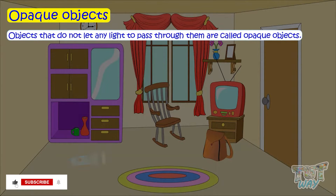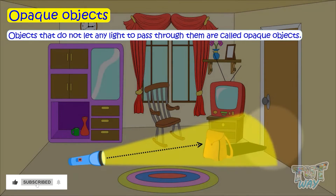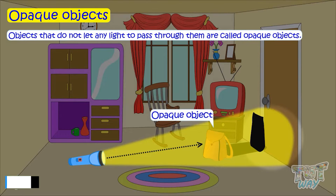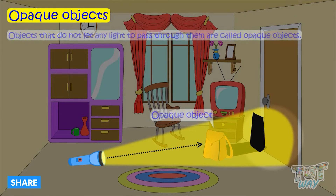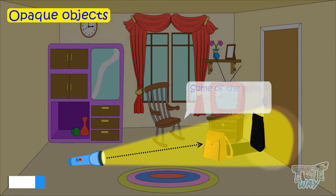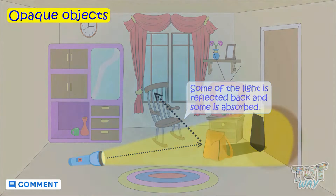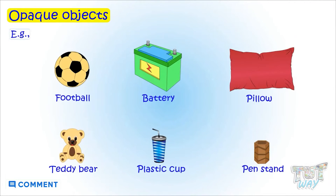Objects that do not let any light to pass through them are called opaque objects. Some of the light is reflected back and some is absorbed. Here are some examples of opaque objects.